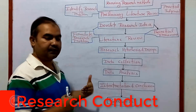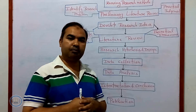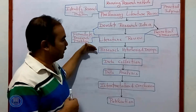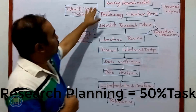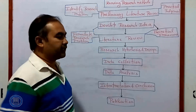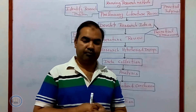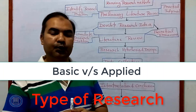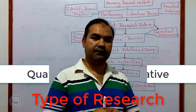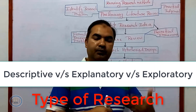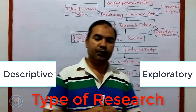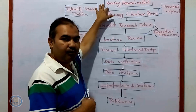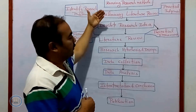When you are going to conduct the research, planning is very important. From the rest of the processes, planning covers near about 50% of the section. The first step is about knowing the research method — that is, what kind of research you are going to conduct. You want to conduct basic research or applied research, qualitative or quantitative research, descriptive, explanatory, or exploratory research. Based upon that, you can plan your research.